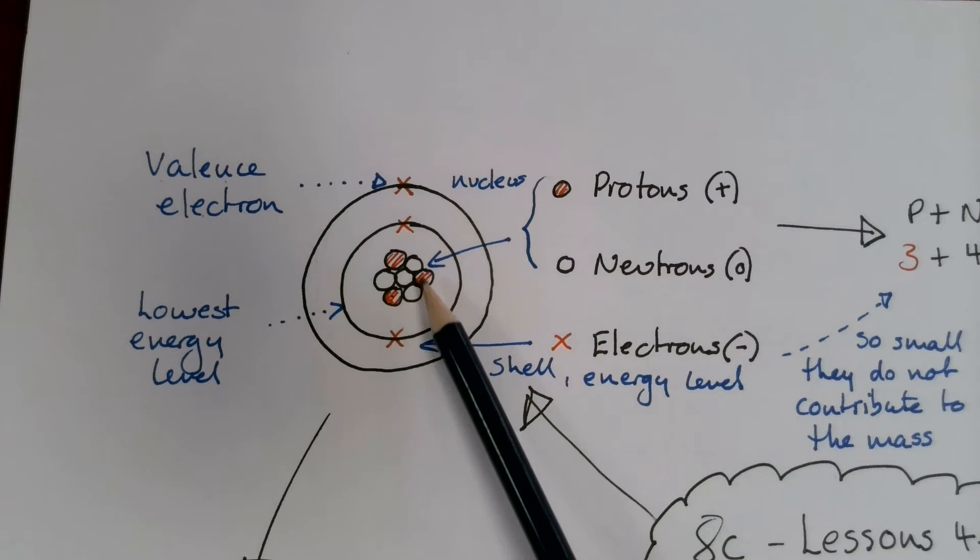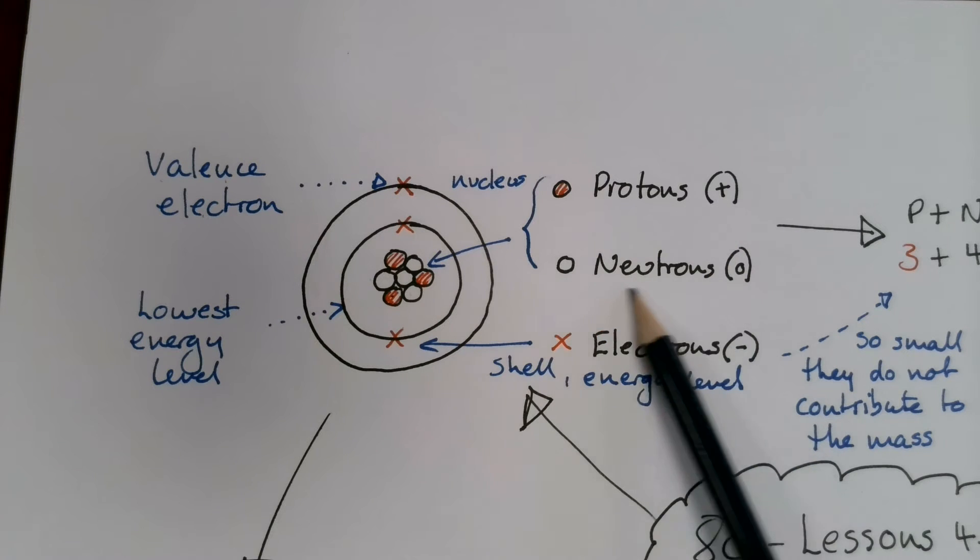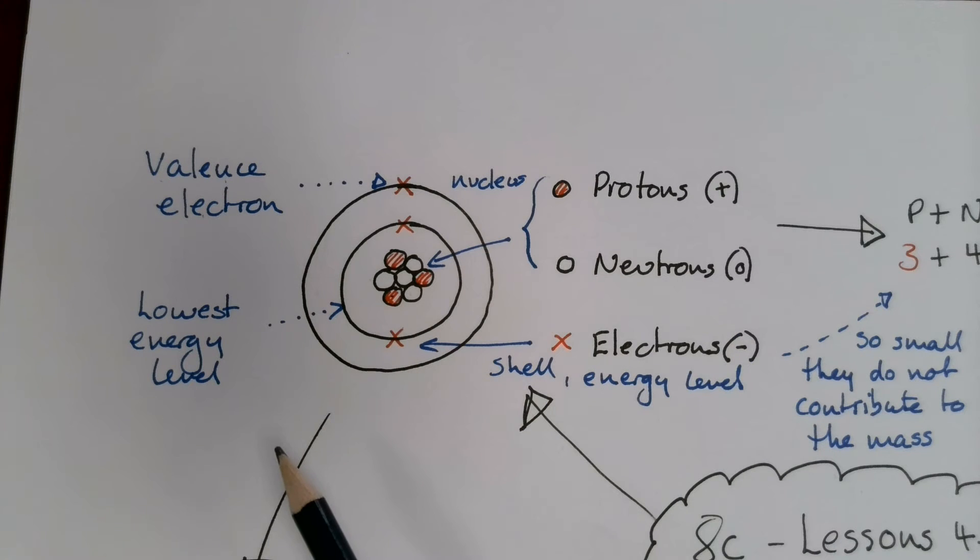And we have one, two, three, four neutrons. The protons have a positive charge, and the neutrons have a neutral charge. Both of these together make up the nucleus of the atom.